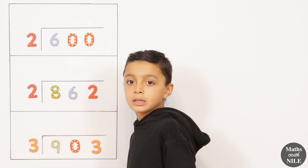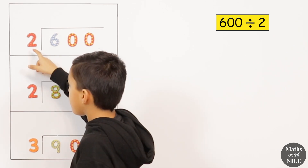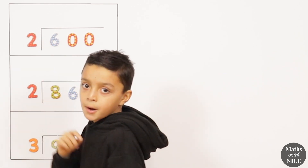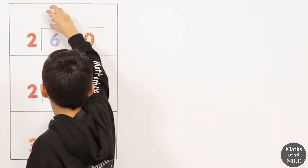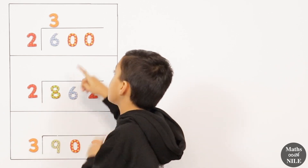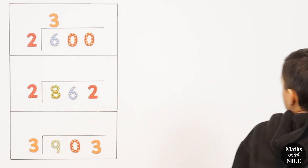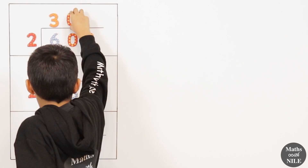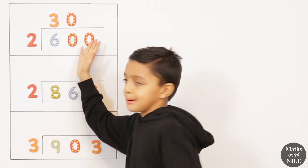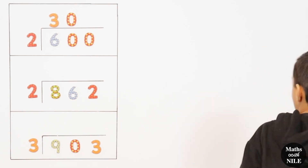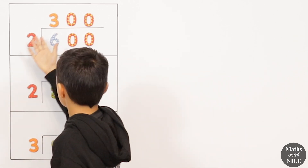Now we have some questions going into hundreds. The first question is 600 divided by 2. We do 6 divided by 2, which is 3. Then 0 divided by 2 — how many twos go into 0? Zero. So we put a 0 there. Then how many twos go into 0 again? Zero. So we put another 0 there. 600 divided by 2 equals 300.